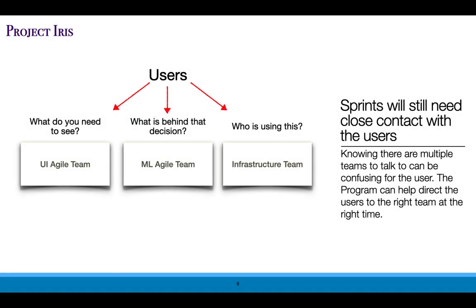With multiple teams, multiple users, and multiple tasks, it can be a challenge to make sure the user is channeled to speak with the right team at the right time. We want to make sure we don't create confusion for the user, but instead assist the user to make optimal use of their time and the Agile team's time. The program should operate as a conduit to the users to help direct them to the right team at the right time, while always maintaining open, frequent, and free communication between the Agile team and the customer.